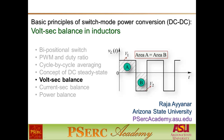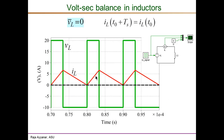In part one, on the volt-second balance principle discussion, we established the principle itself: the average voltage across an inductor, VL average, is zero under DC steady state. Now let's look at an example illustrating the volt-second balance principle.